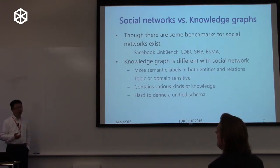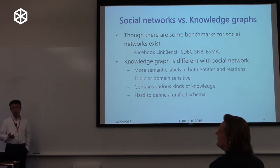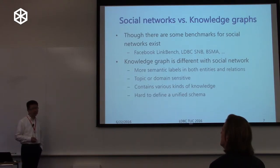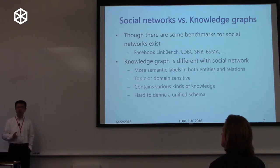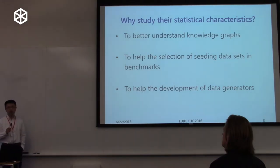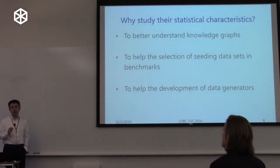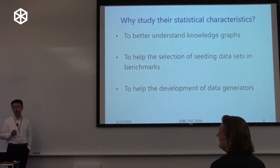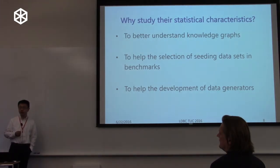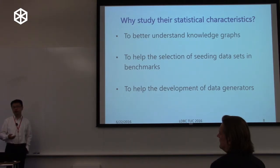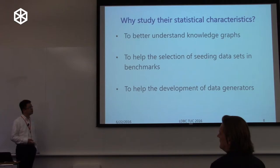In knowledge graphs we have several different parts. Usually we have ontology or taxonomy, which we don't naturally have in social networks. We also have facts, which are sometimes similar to social networks and sometimes not. We should do some statistical evaluation on knowledge graphs to better understand them. Since our own knowledge graph is relatively small, we hope to build a data generator for knowledge graphs to evaluate graph management systems.